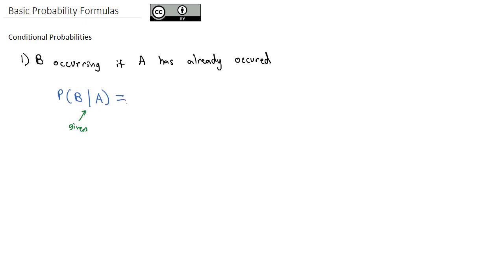And the way we calculate the probability of B given A is we look at the probability that both occurred, the probability of A and B, and we divide it by the probability of the given information. In this case, the probability of A that was given to us.